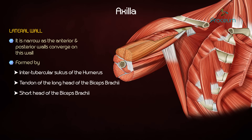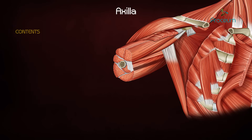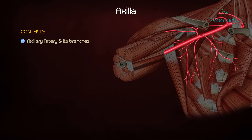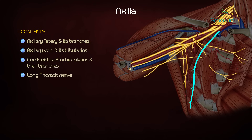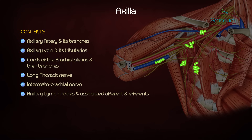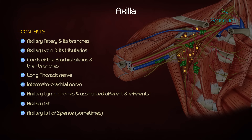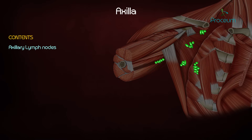The lateral wall also includes the tendon of the long head of biceps brachii, short head of biceps brachii, and coracobrachialis. Contents of the axilla include: axillary artery and its branches, axillary vein and its tributaries, cords of the brachial plexus and their branches, long thoracic nerve, intercostal brachial nerves, axillary lymph nodes with associated afferents and efferents, axillary fat, and the axillary tail of Spence.